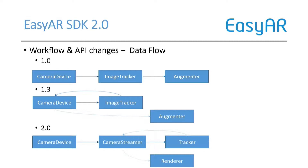Let me give a brief overview of the changes to the EZAR workflow. In the first version, there was a camera device, frames went to an image tracker, and then to the AR content. In version 1.3 we changed it slightly, and at 2.0 we added another camera streamer component. This makes it more useful as a one-stop solution. We have a JavaScript API, a Java API, and an Objective-C API, used at different levels.